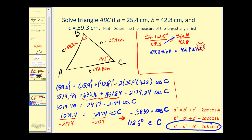Now we'll cross multiply. Divide by 59.3. Sine B is approximately 0.6668. If we take the inverse sine of both sides, angle B is approximately 41.8 degrees.